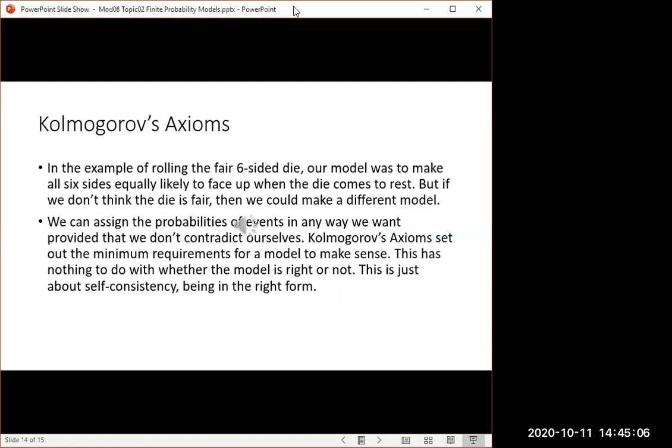For the example of the experiment with the six-sided die, you could make a model in many different ways. You could use the equally likely outcomes model, but they don't really have to all be equally likely. So you have a lot of freedom in how you make your model, but you can't do just anything, because you don't want to make a model that will contradict itself. You don't want where you try to figure out your probabilities in different ways, and you come up with two different numbers for the same event. We've got a list of axioms or requirements for a model to prevent it from contradicting itself, to make it self-consistent.